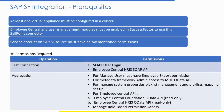Let us see the prerequisites for SAP SF integration. At least one virtual appliance needs to be configured to have communication between IdentityNow Cloud and the SAP source. However, SailPoint recommends having two virtual appliances in a cluster. The following permissions and data are required for test connection (to trace connectivity from IDN Cloud to SAP HR source) and account aggregation (to aggregate account details to IDN Cloud).